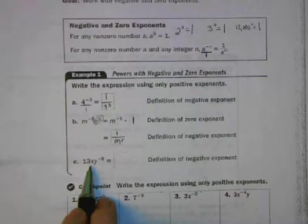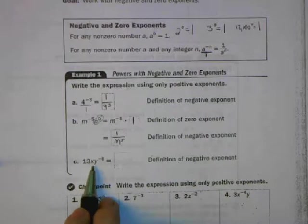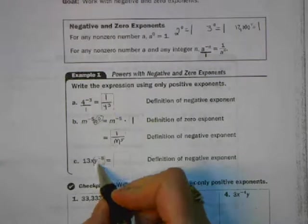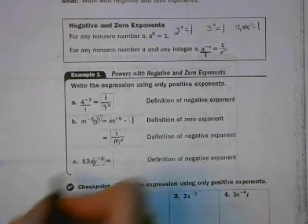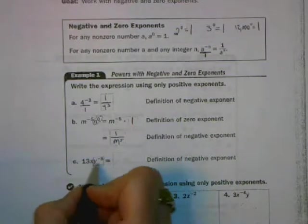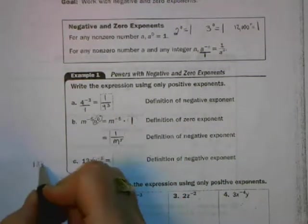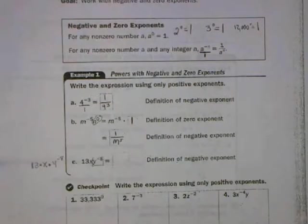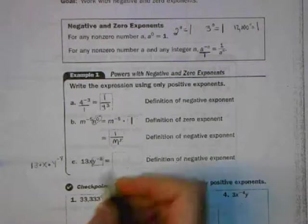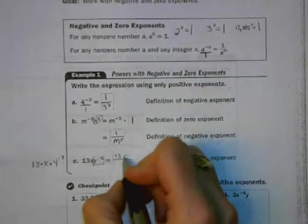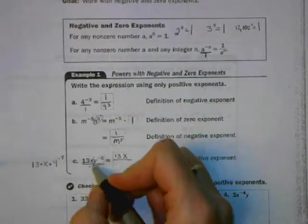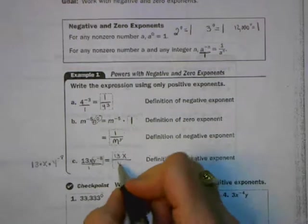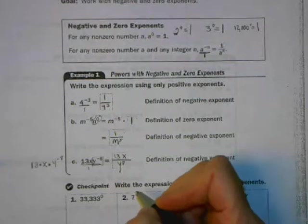In part c, we have to be real careful about which exponents go with which numbers. The negative 8 here is only attached to the y. It only goes with the thing in front of it. It might help us to write out the multiplication signs that are embedded in this problem. So this problem is 13 times x times y to the negative 8th power. And that negative 8 is only attached to the y. So the 13 and the x stay on top of the fraction bar. There's no reason for them to move. They don't have negative exponents attached to them. But y to the negative 8th on the top is the same as y to the positive 8th on the bottom.